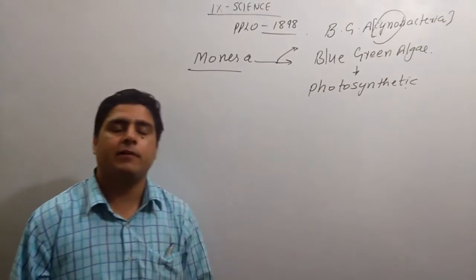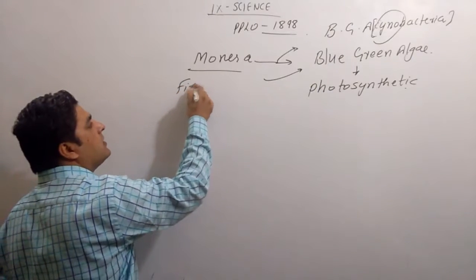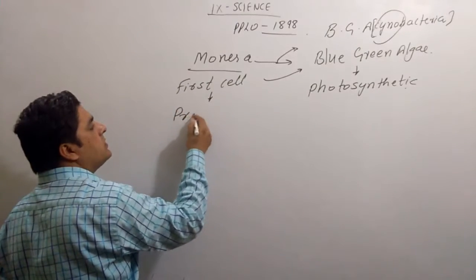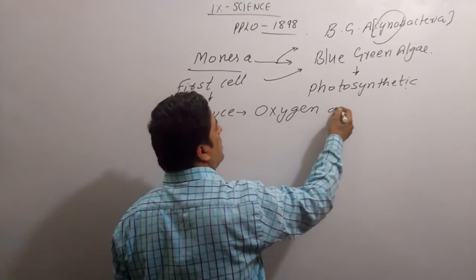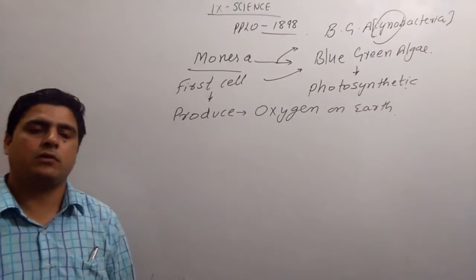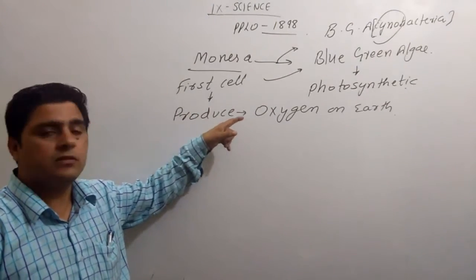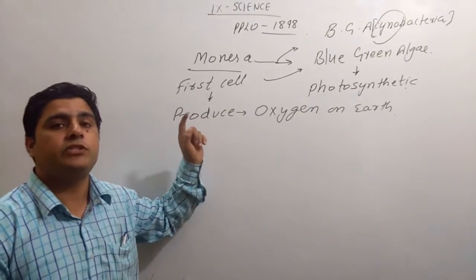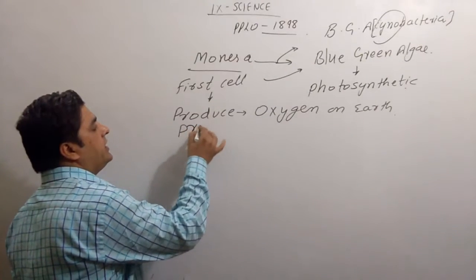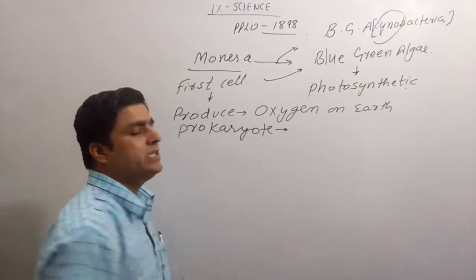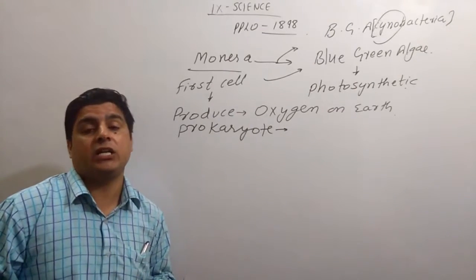This blue-green algae was the first cell that produced oxygen on earth. This was the first cell or organism which gave oxygen on earth. As it is prokaryote, it is the first organism that works as a photosynthetic organism.